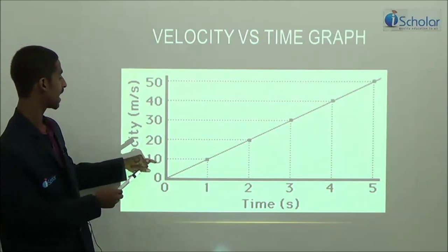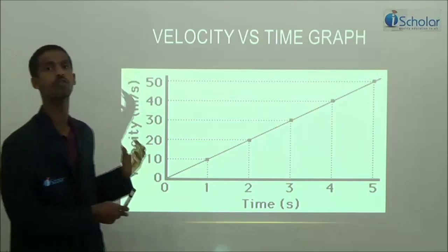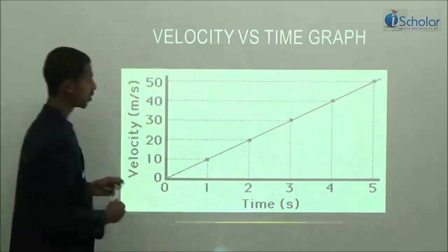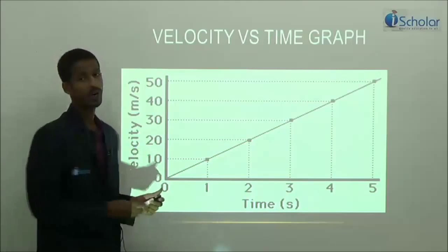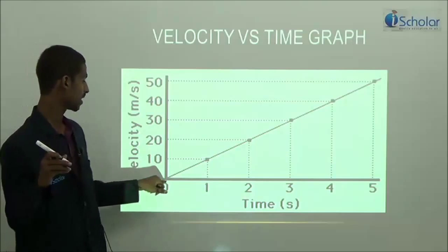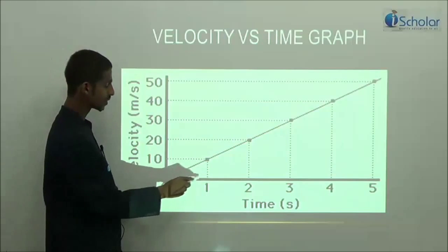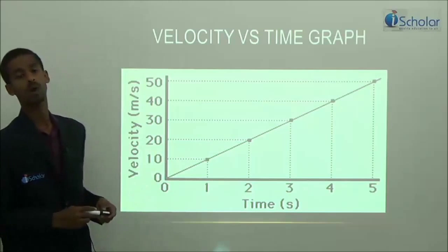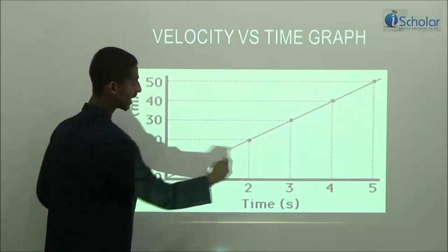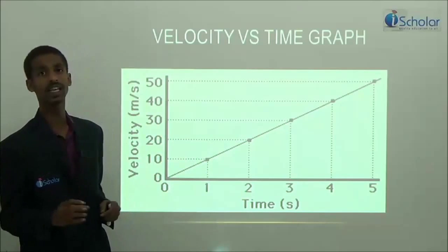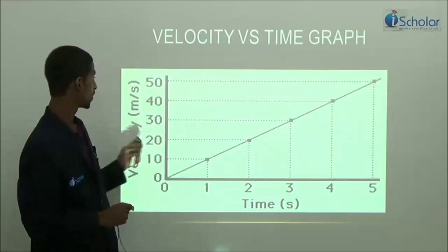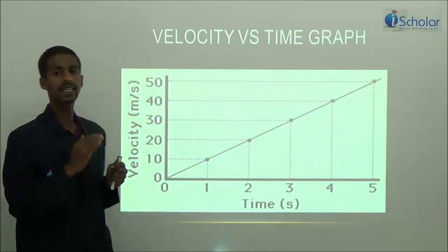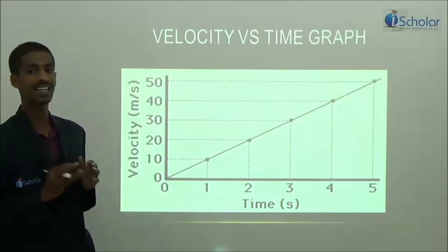Here is one more representation of a velocity-time graph. The y-axis shows velocities of 10, 20, 30, 40, 50 and the x-axis shows time in seconds: 1, 2, 3, 4, 5. Starting from 0, the body is at its initial position at time 0. In 1 second it is moving at 10 m/s; at 2 seconds, 20 m/s; at 3 seconds, 30 m/s. Velocity is increasing linearly, hence acceleration remains constant.